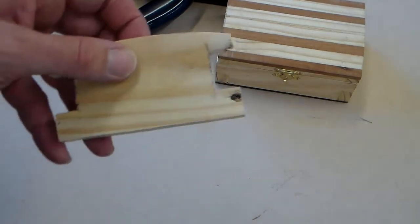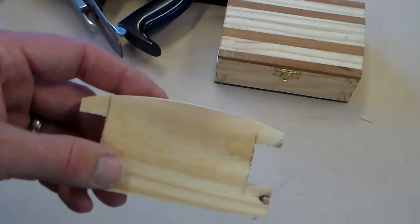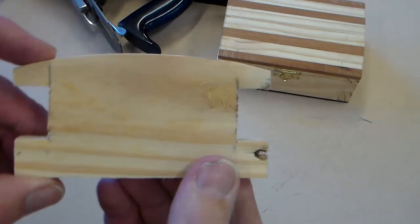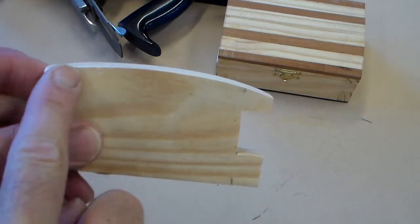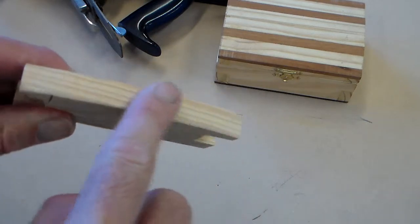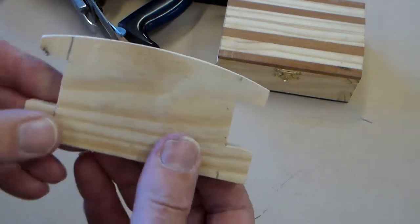Once you've done that and sanded it, the end of the box, the two ends of the box should look like that. And then we've got our curve for our barrel top box. This one I've sanded nice and smooth and this is ready to go.